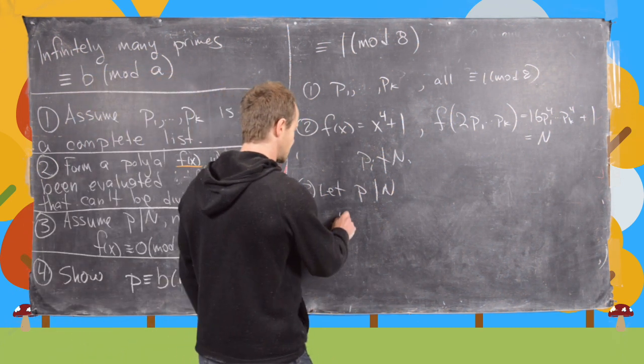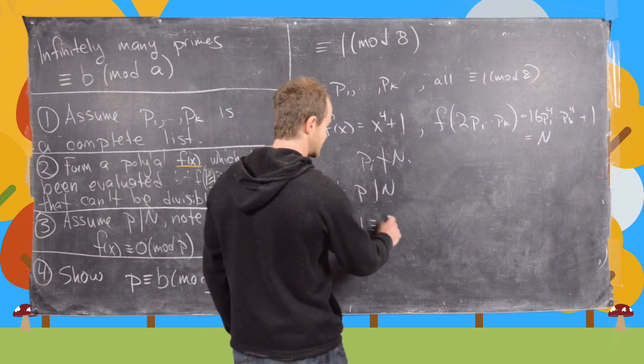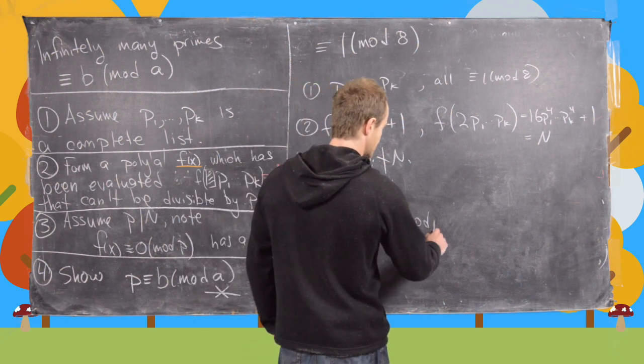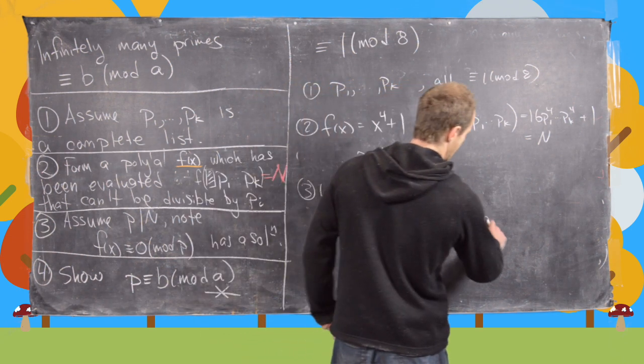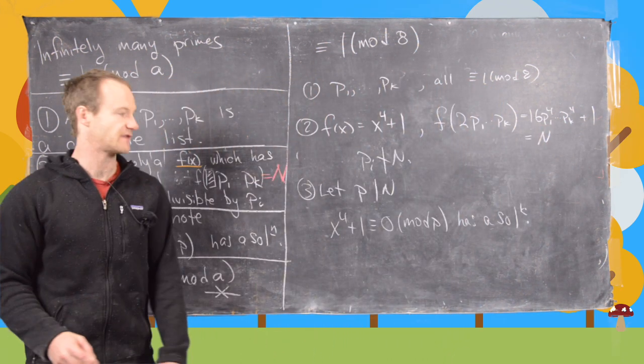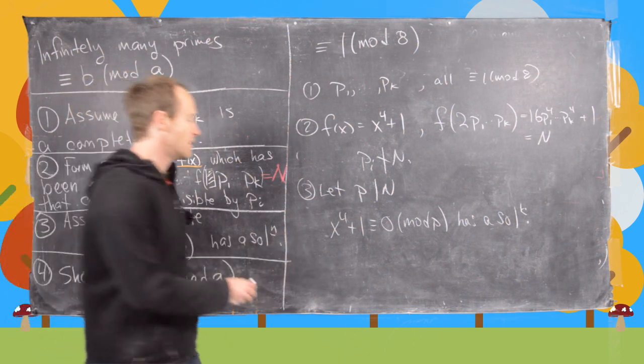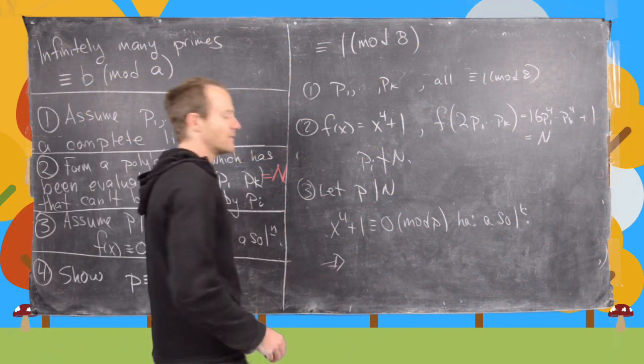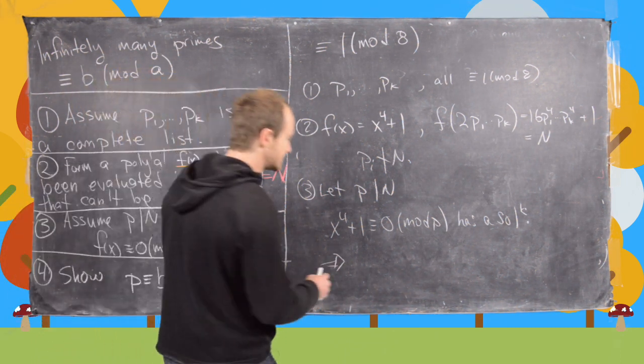But that means x to the fourth plus 1 congruent to 0 mod p has a solution. We know the solution, it's that solution right there.